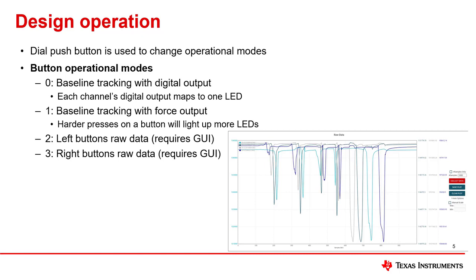The second operational mode provides a force touch response on the button LEDs. The harder a button press, the more LEDs will light up. Only one button can be pressed at a time in this mode, so if two buttons are pressed, the stronger response will be shown on the LEDs. The last two modes are used in conjunction with the design's GUI. The raw data for each LDC3114 can be seen in each mode, respectively.